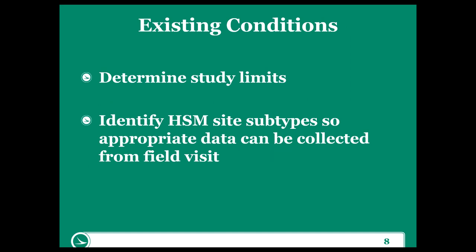Looking at existing conditions for our site — particularly at the scoping call — it's really important to understand what your study limits are. A lot of times we know we have five intersections in a city or township that are really a problem, or that a corridor is really bad. We get these generic assessments of what the problem is, but it's really important we understand exactly what the study limits are, because that's going to impact the type of data we're collecting, what crash data we're collecting, and really what HSM sites and subtypes are going to be evaluated. Whether we're analyzing one small section of roadway versus five or six different intersection types, we need to make sure we're thinking ahead.